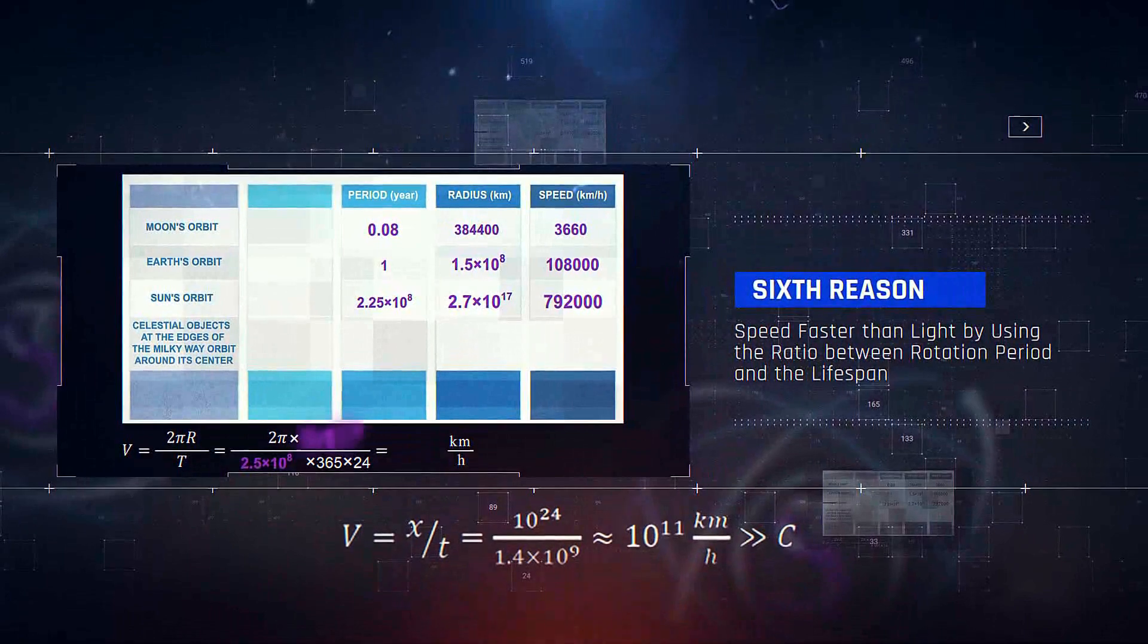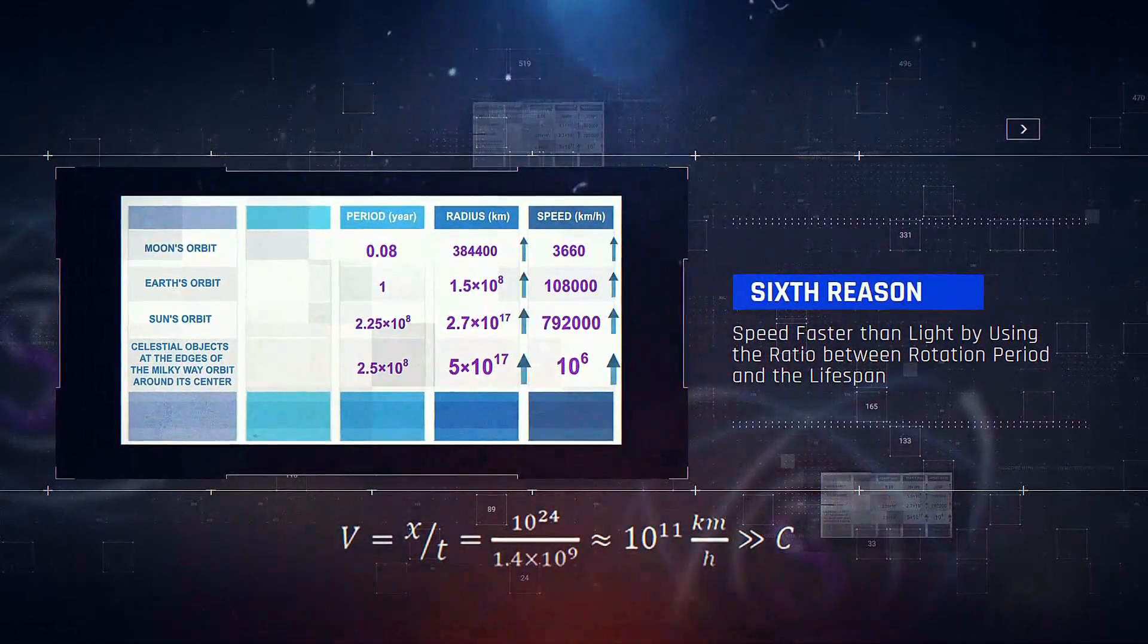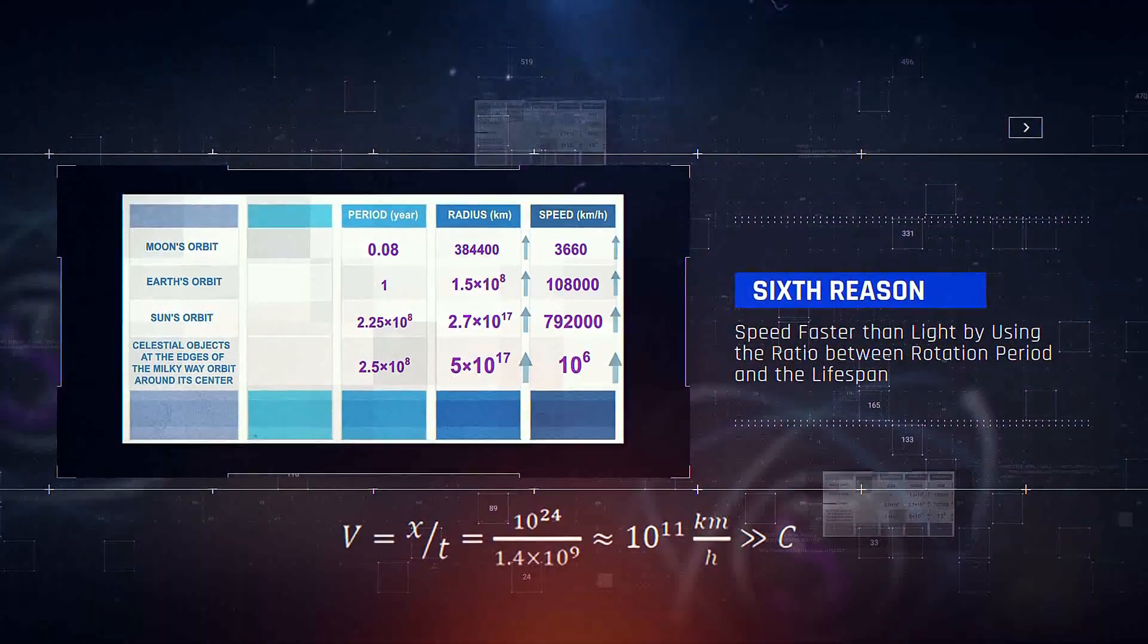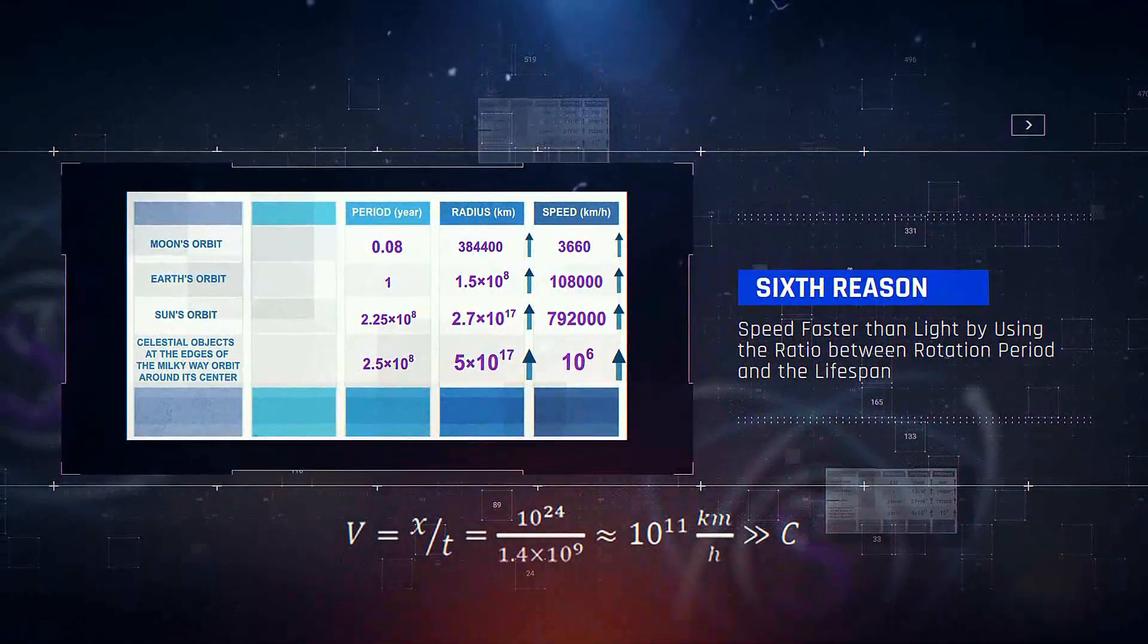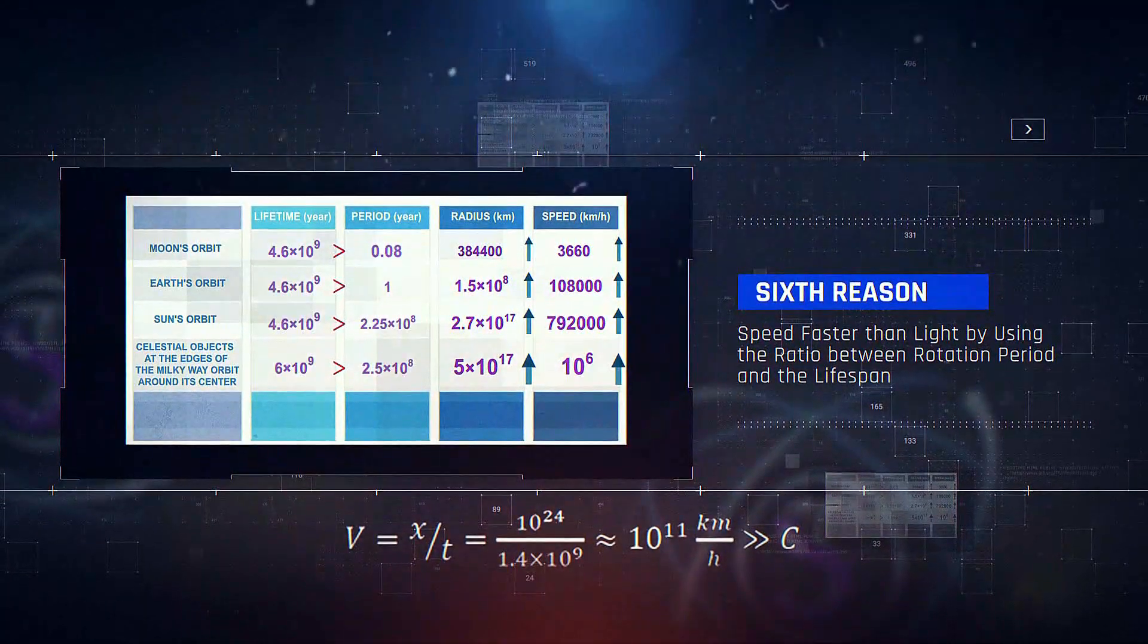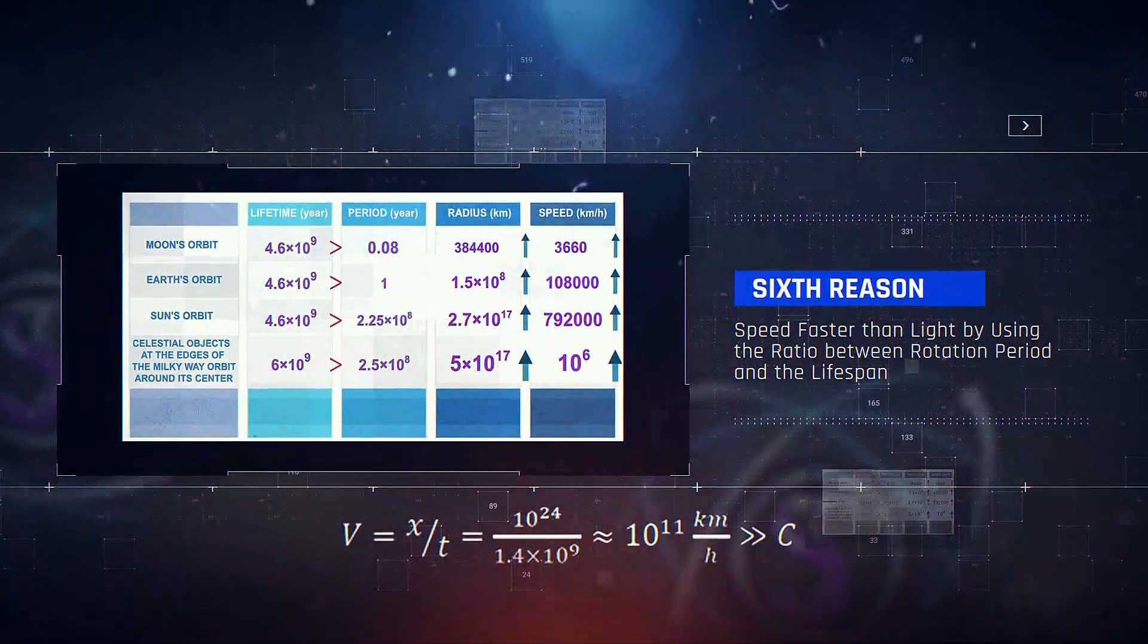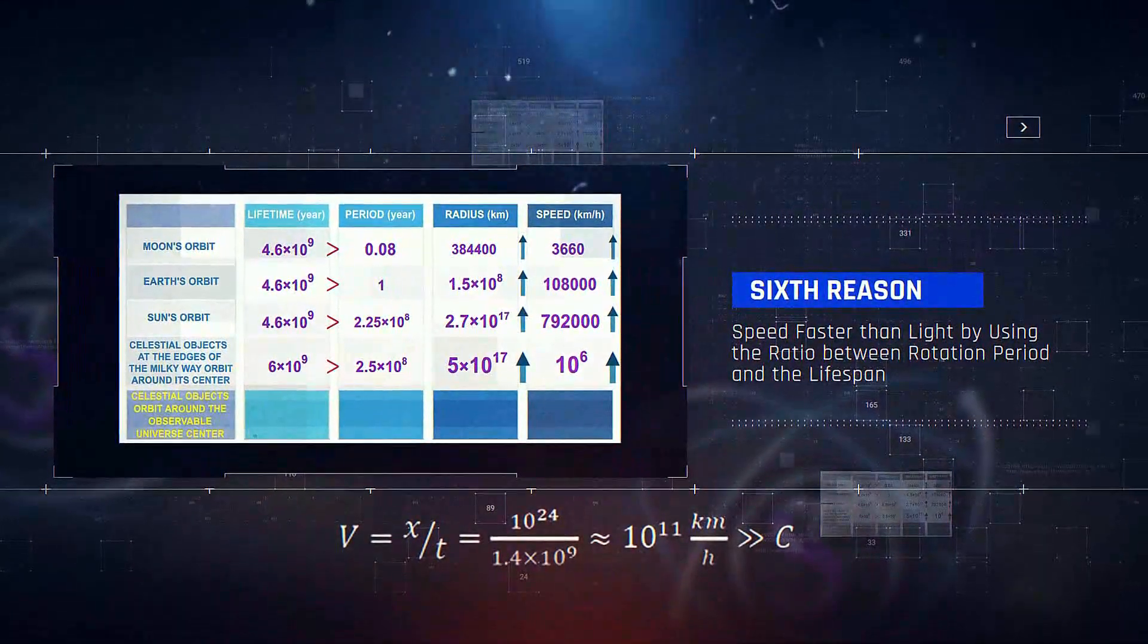6. Speed faster than light by using the ratio between rotation period and lifespan. Lifespan and the rotation period of all celestial objects are proportional. For example, in the universe, the rotation period of celestial objects such as the moon, Earth, solar system, and galaxies is always much smaller than one-tenth of their lifespan.